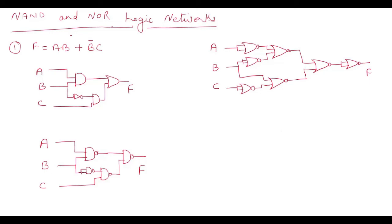Hello everybody. In this video we are going to learn about NAND and NOR logic networks, meaning we are going to design any circuit using only NAND gates or only NOR gates. For that I have taken an example: F equals AB plus B-complement C. These are two min-terms, and this equation has been implemented as a circuit here.